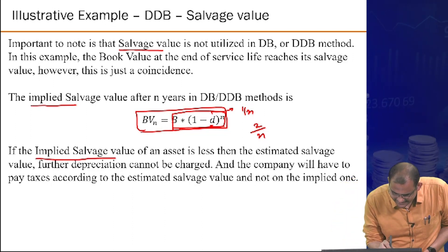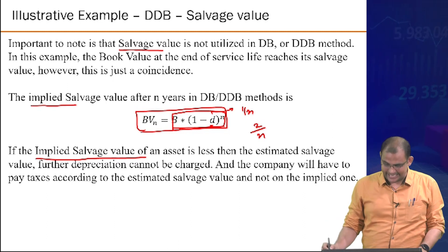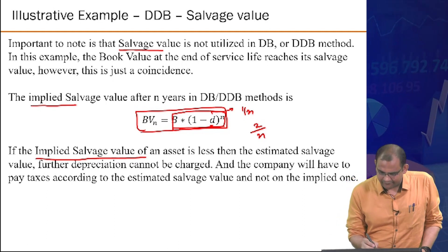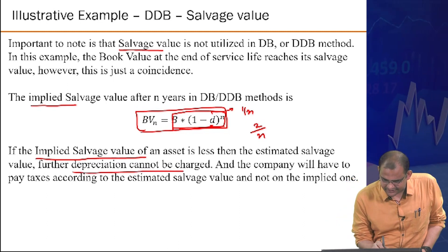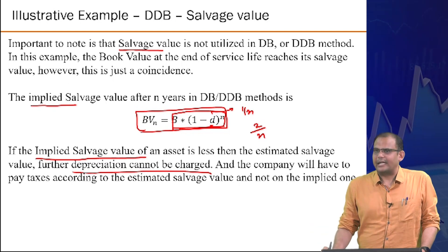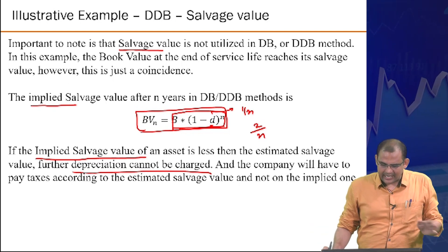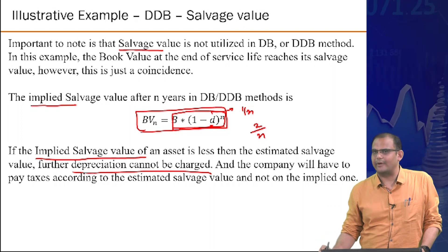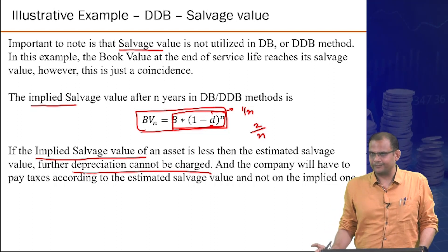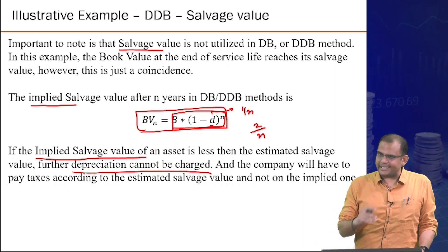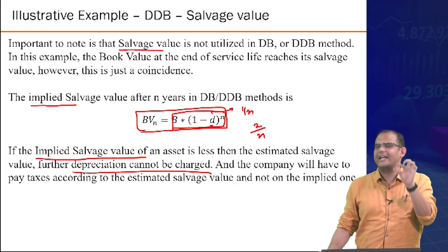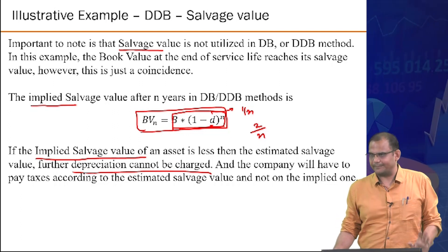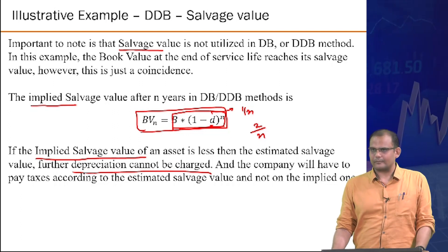If the implied salvage value of an asset is less than the estimated salvage value, further depreciation cannot be charged and the company must pay taxes according to the estimated salvage value. In any case, you must ultimately reach the same prescribed salvage value.